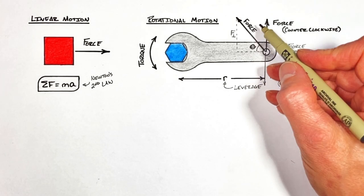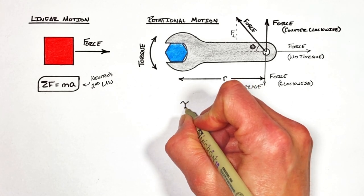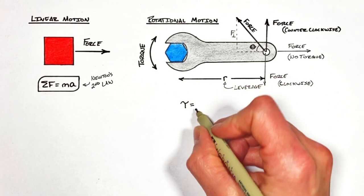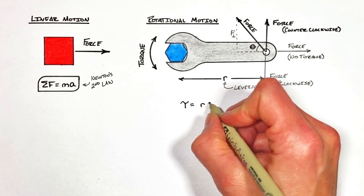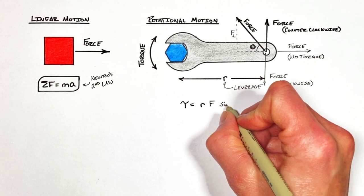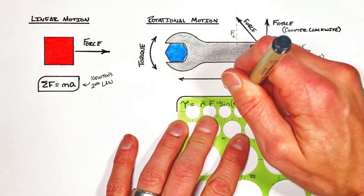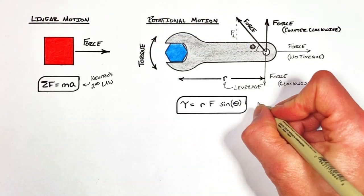So it's by combining force and radius that we can generate an equation for torque. Given by the Greek letter tau, torque is equal to radius multiplied by a force times the sine of theta. Where theta is the angle between the radius and force vectors.